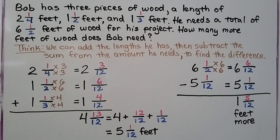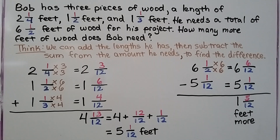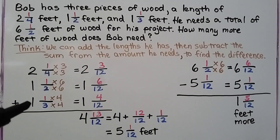Bob has three pieces of wood: a length of 2 and 1 fourth feet, 1 and a half feet, and 1 and 1 third feet. He needs a total of 6 and a half feet of wood for his project. How many more feet of wood does Bob need? We can add the lengths he has, then subtract the sum from the amount he needs to find the difference.